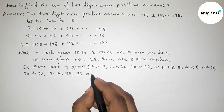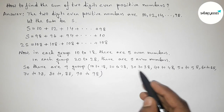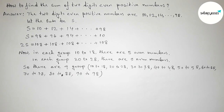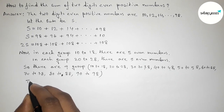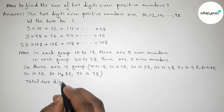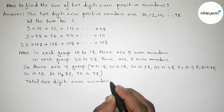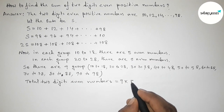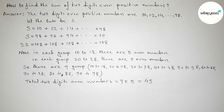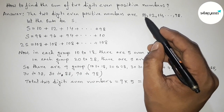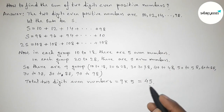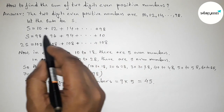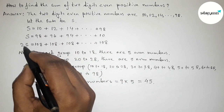So the total number of two-digit even positive numbers equals 9 groups multiplied by 5 numbers in each group, which gives us 45. There are 45 even two-digit numbers in total, meaning we are adding 45 such pairs.